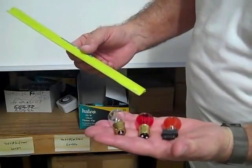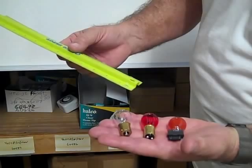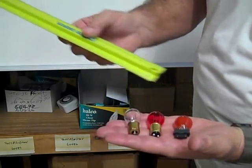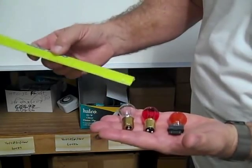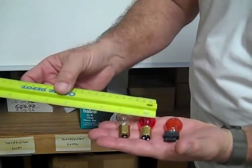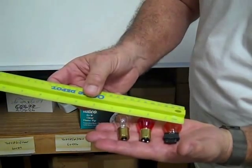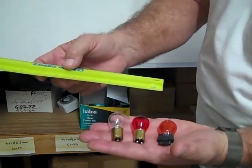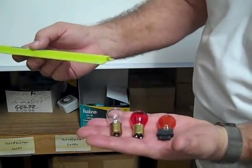Here are three examples of an S-8 envelope. Each bulb has a different base but still has an S-8 envelope which measures eight eighths of an inch across the glass envelope, equivalent to one inch or 25 millimeters.